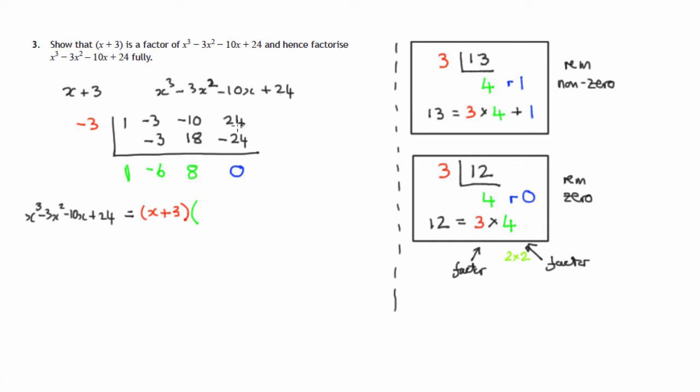Now these green numbers stand for a polynomial. In the same way that these black numbers, 1, negative 3, negative 10, 24, came from this polynomial, these green numbers come from another polynomial and it's 1 power of x less. So where we started with an x cubed, a polynomial degree 3, we're now reduced to a polynomial degree 2, a quadratic. 1x squared minus 6 lots of x plus 8.